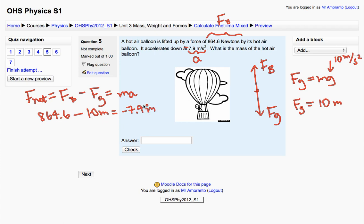You'll see both sides of the equation has m in it, and it really just becomes an algebra problem. All I've got to do now is add 10m to both sides. When I do that, I get 864.6 equals 2.1m.